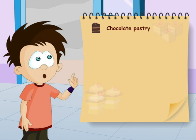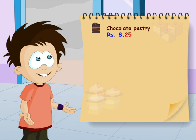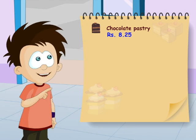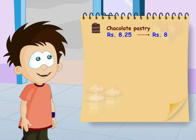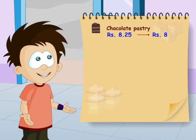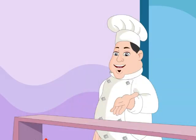The chocolate pastry is for 8 rupees 25 paise. Since 25 is less than 50, 8 rupees 25 paise is rounded to the lower ones. That is 8 rupees. Am I right? Yes, you are. Go on.